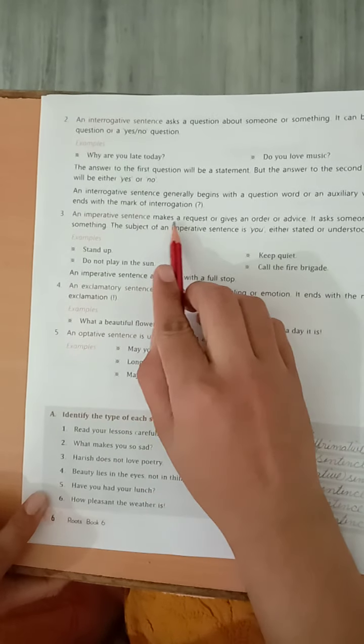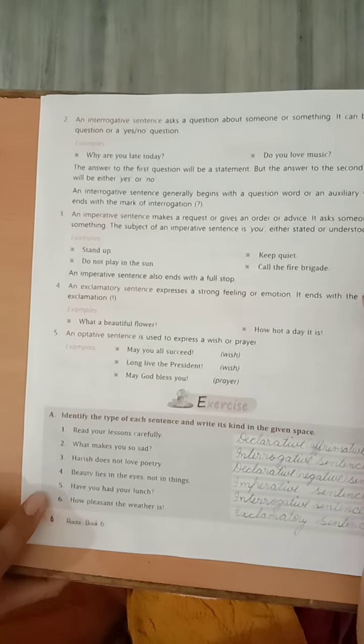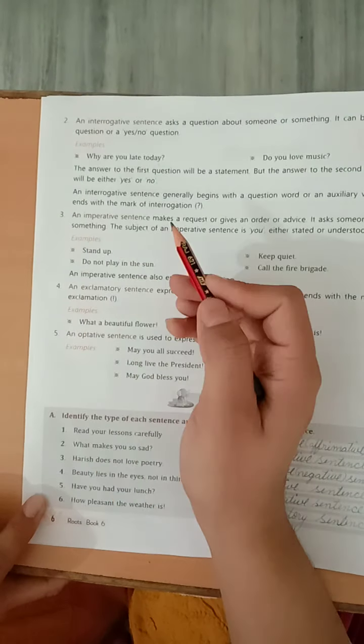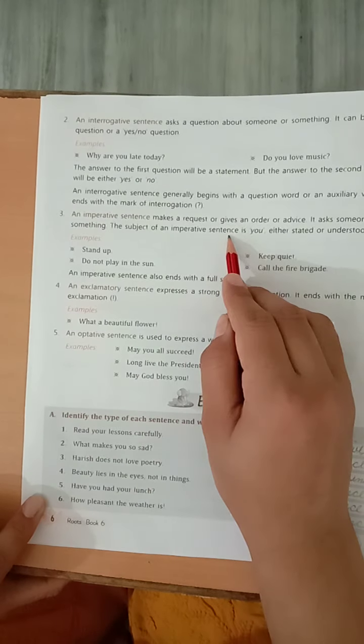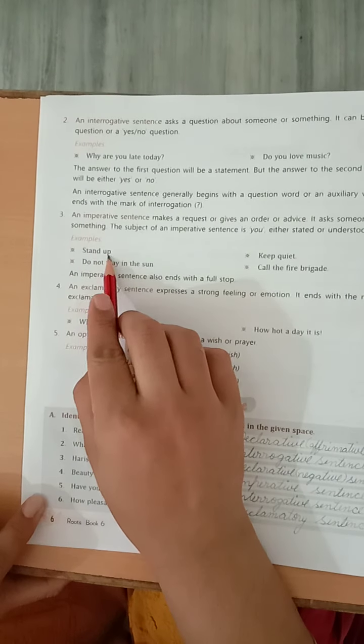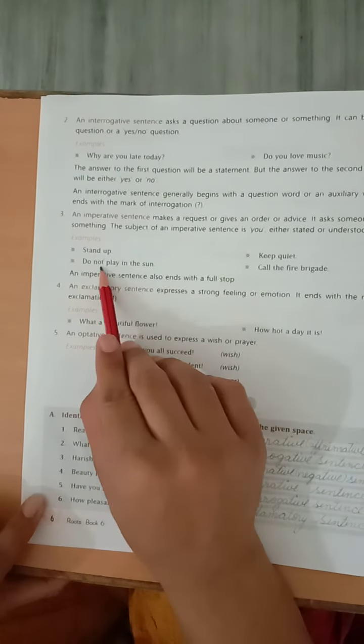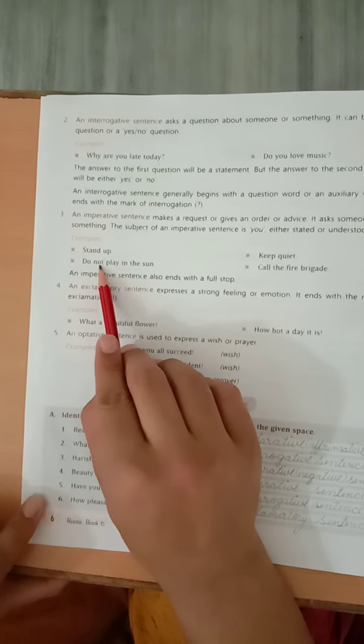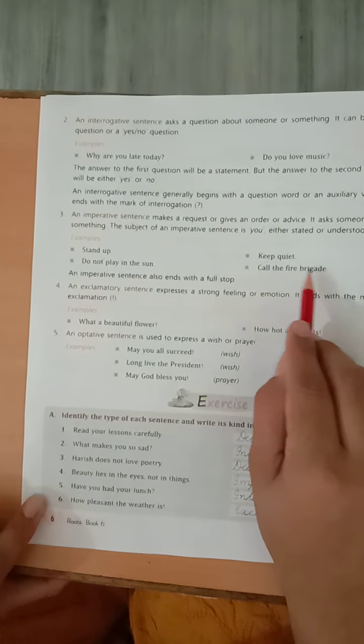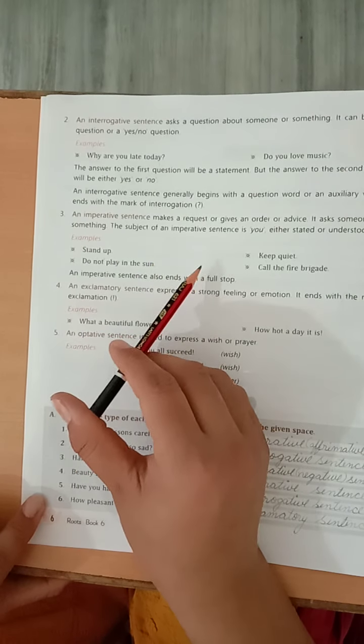An imperative sentence makes a request or gives an order or advice. Yeah, jiske andar aap request kar sakti ho, ya aap order de sakti ho, ya aap kisi ko advice de sakti ho. This form mein ye sentence bante hain. It asks someone to do something, ya toh aap kisi ko kuch karne ke liye bol sakti ho. The subject of an imperative sentence is you either stated or understood. For example, stand up. Aap kisi ko bol rahe, stand up. Aap order de rahe. Keep quiet. Aap bol rahe, keep quiet. Chup rehne ke liye aap bol rahe. Do not play in the sun. Aap usko manna kar rahe. Call the fire brigade. Aap usko phir se bol rahe, call the fire brigade. Ismein aap order de sakti ho, ya bhi aapko maine bataya ya toh aap request kar sakti ho, advice de sakti ho. Okay?